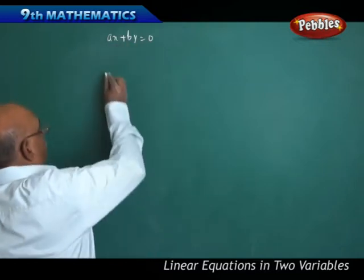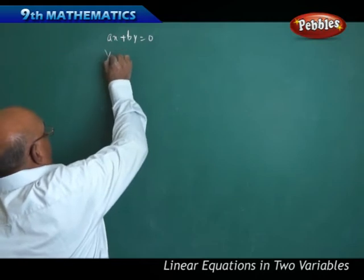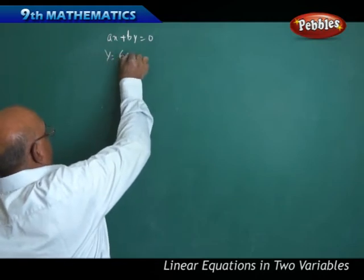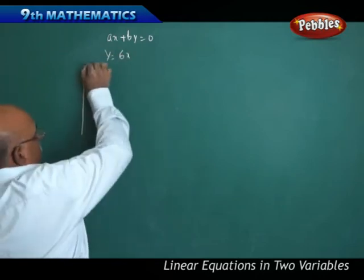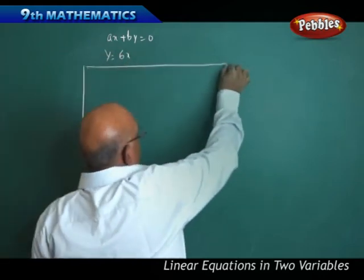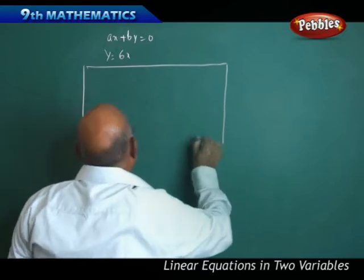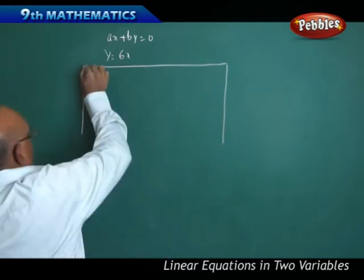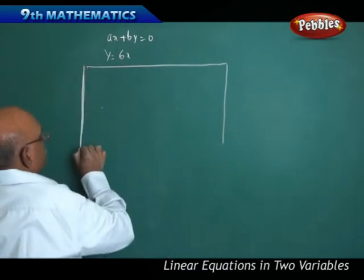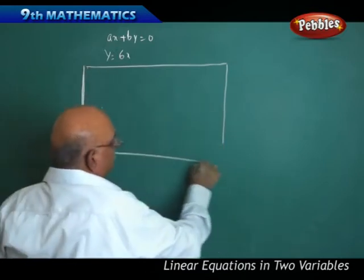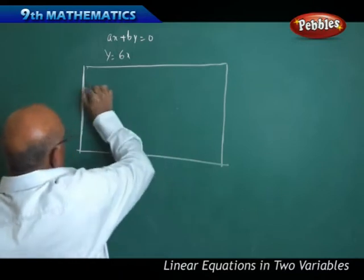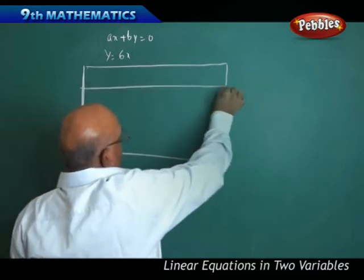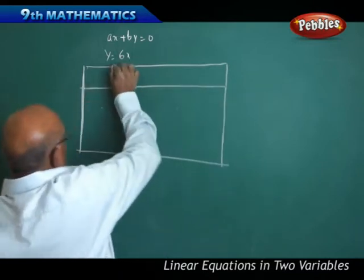Suppose if I take the problem y equal to 6x. We will find out minimum 5 to 6 solutions, or minimum 3 to 4 solutions for this.